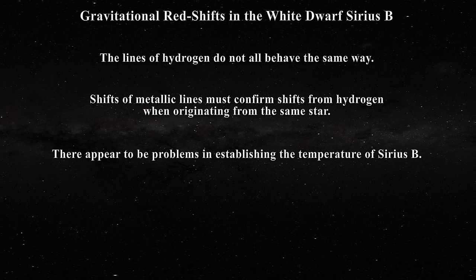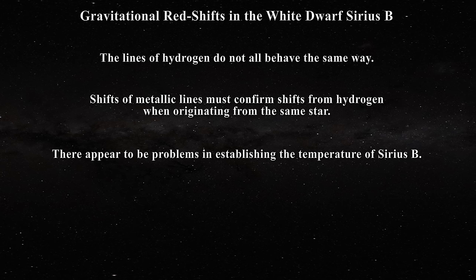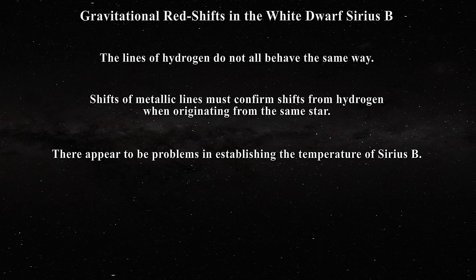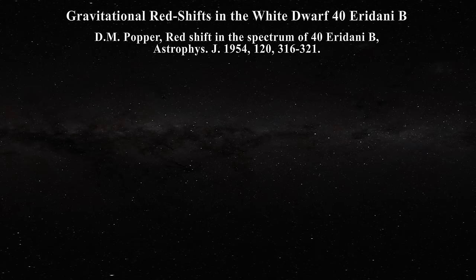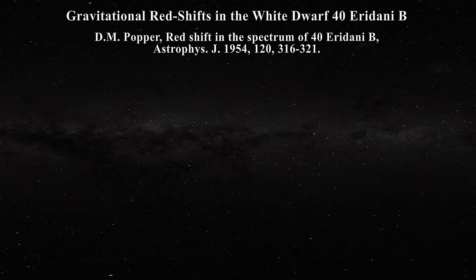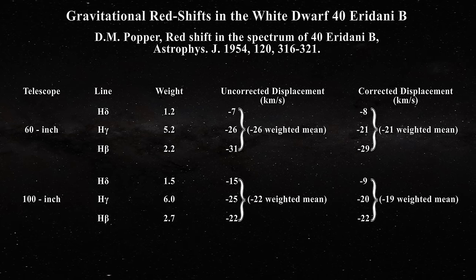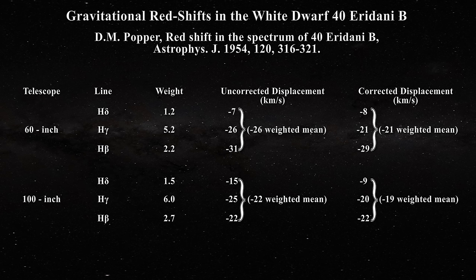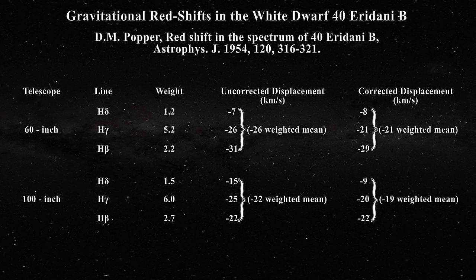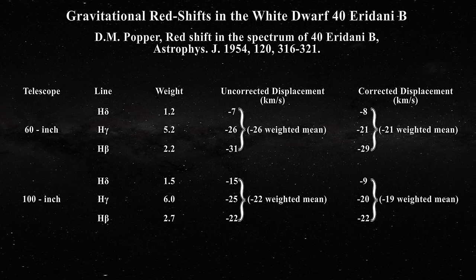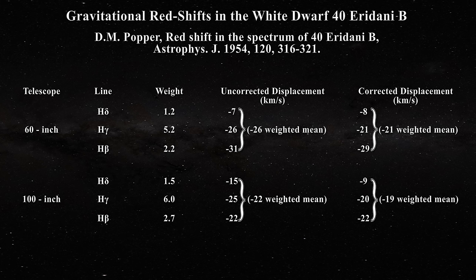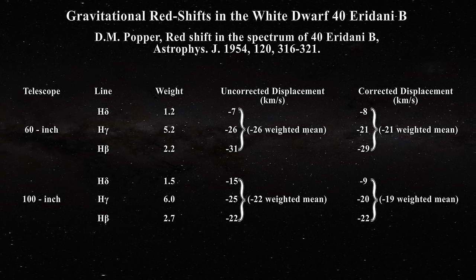In 1954, Daniel Popper would report a gravitational redshift for another famous white dwarf, 40 Eridani B. Note how he manipulated his data to get the redshift he wanted — he lowered the weight on hydrogen delta and hydrogen beta and increased the weight for his hydrogen gamma results. No wonder he got the 20 km/s answer he sought.